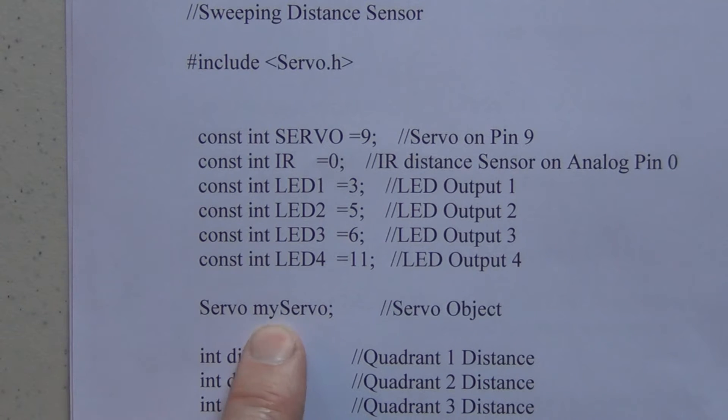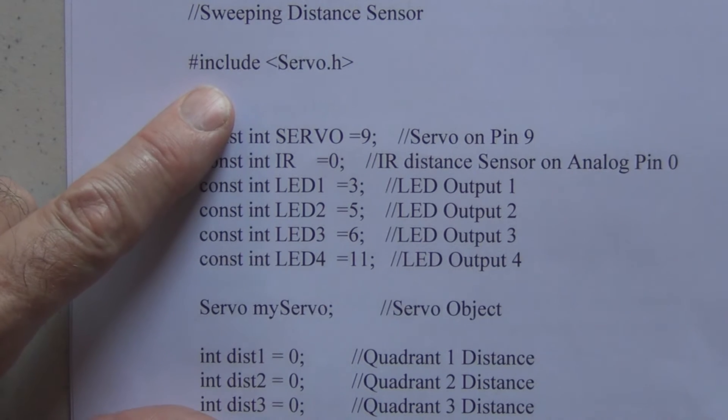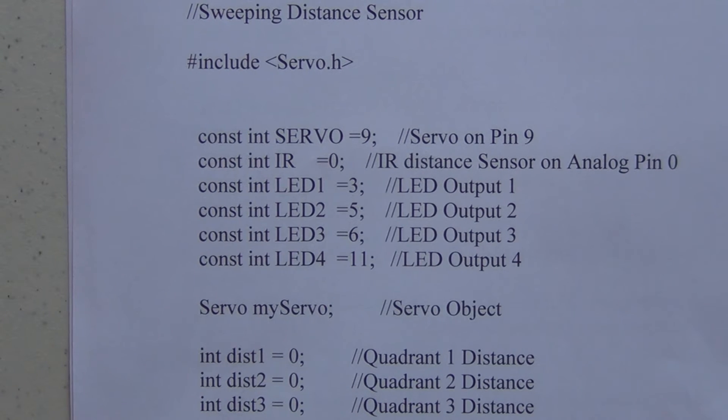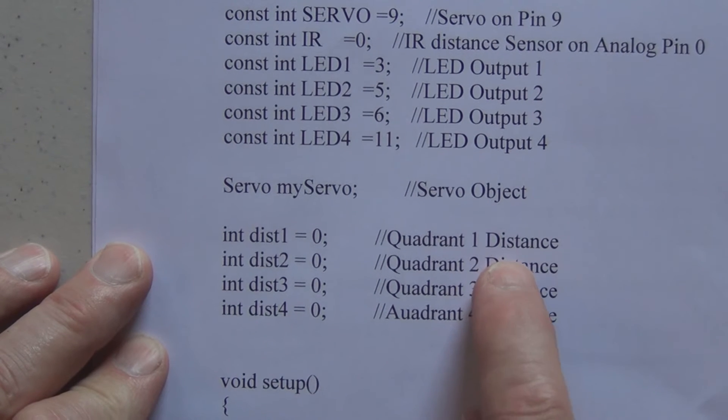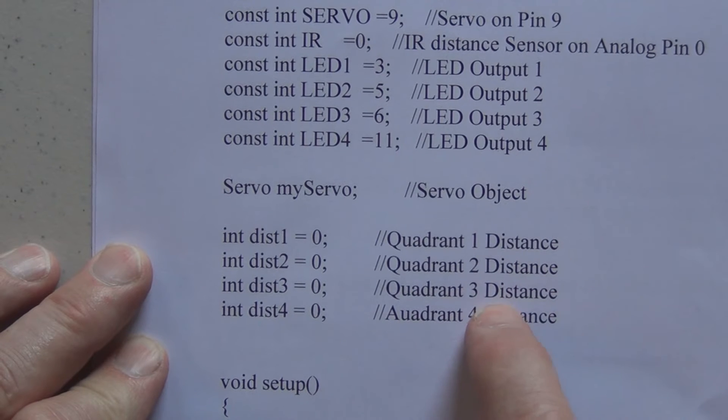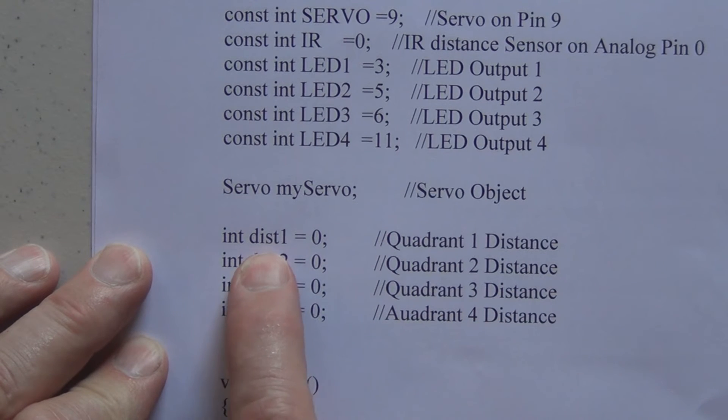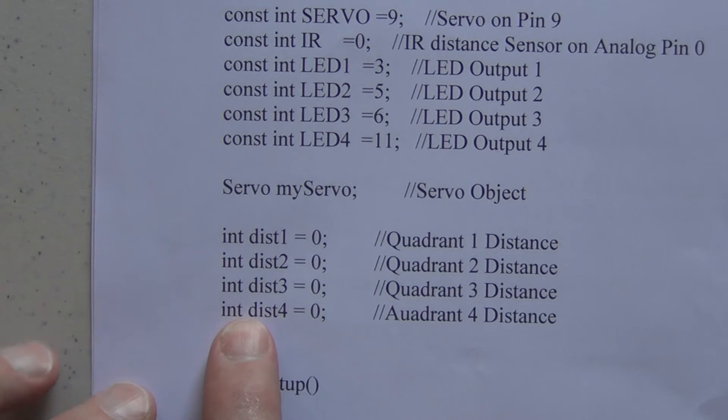That gives us, this variable has all the resources available from the myServo library available to it. Here we are defining the 4 quadrants: 15 degrees, 65 degrees, 115, and 165. But we are just right now declaring distance 1, 2, 3, and 4 as integers and initializing them to 0.